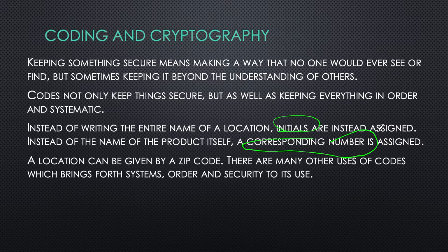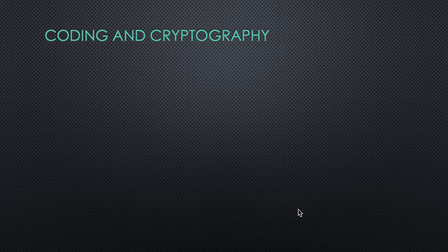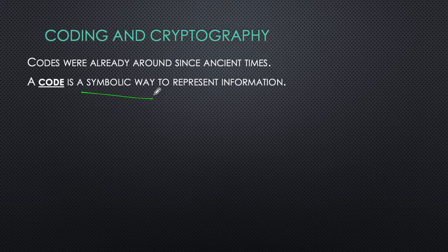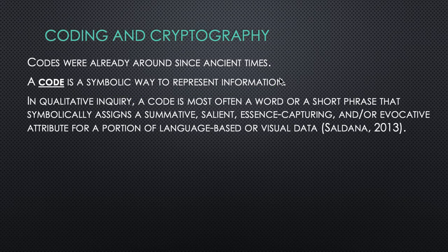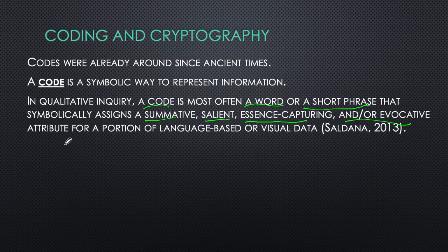Instead of giving the entire location, one can just provide a zip code. There are many other uses of codes which bring forth systems, order, and security. Codes were already around ever since ancient times. A code is a symbolic way to represent information. In qualitative inquiry, a code is most often a word or short phrase that symbolically assigns a summative, salient, essence-capturing, or evocative attribute for a portion of language-based or visual data.